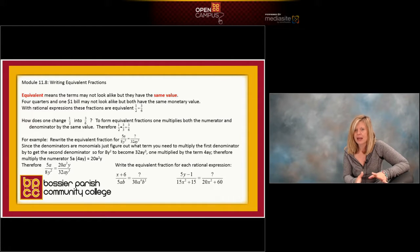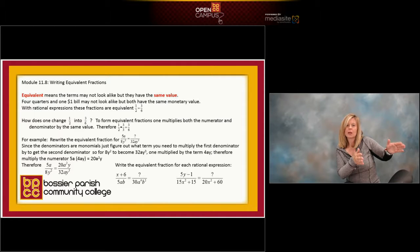So in retrospect, to make 8y squared become the denominator 32ay cubed, we multiplied by a 4, the letter a, and a y. We had to multiply by 4ay.